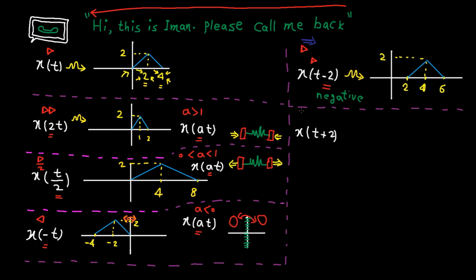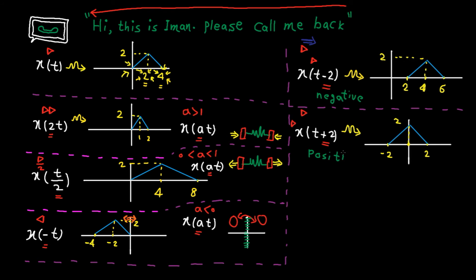Now let's look at x(t+2). This means we play the signal 2 units sooner. That's why the signal gets shifted to the left by 2 units. So 0 goes to -2 and 4 goes to 2. The amplitude stays the same. In general, when the time shift is positive, it means we play the signal sooner, and that's why we shift the signal to the left.